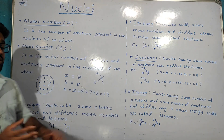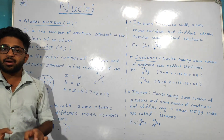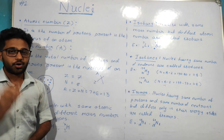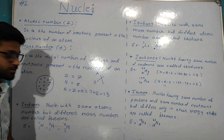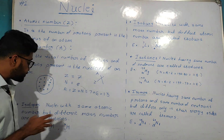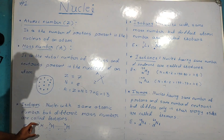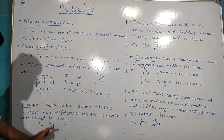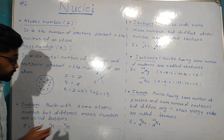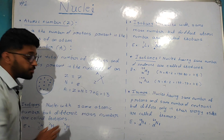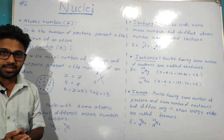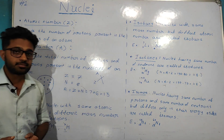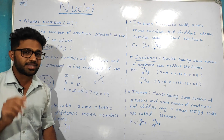Nuclei with the same atomic number but different mass number are called isotopes. For example, hydrogen, deuterium, and tritium are isotopes of hydrogen. These are examples of isotopes.